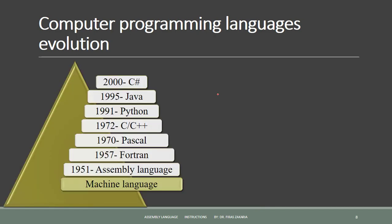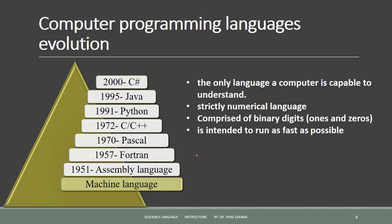Machine language is the language understood by a computer. It is very difficult to understand but it is the only thing that the computer can work with. All programs and programming languages eventually generate or run programs in machine language. Machine language is made up of instructions and data that are all binary numbers.